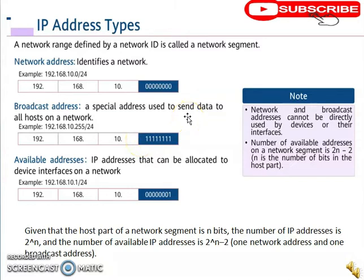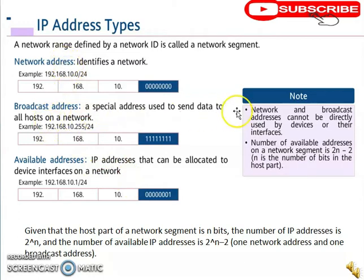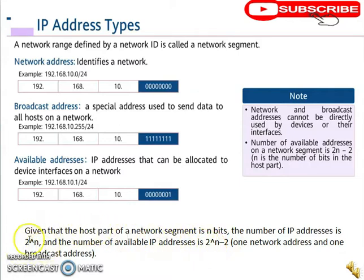We also have total addresses and available addresses. Total addresses = 2^n, where n is the number of host bits. Available addresses = 2^n − 2, because we subtract two for the network address and the broadcast address — both of which cannot be directly assigned to a device.